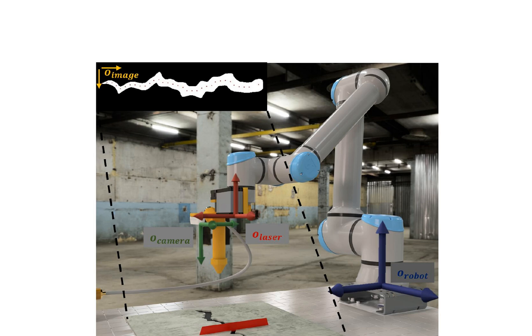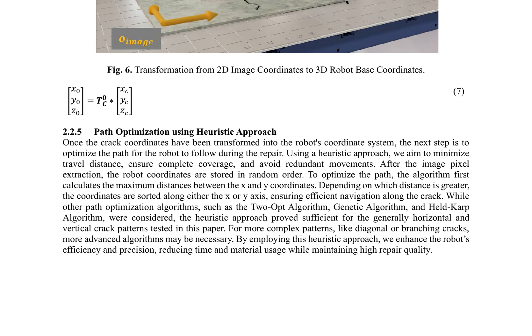The pixel coordinates are then transformed into 3D camera coordinates using the pinhole camera model, as illustrated by equation 6, and subsequently converted to robot-based coordinates using the camera's extrinsic parameters and the robot's API. The proposed method enables accurate and efficient crack detection and coordinate extraction, forming the basis for the subsequent stages of the repair process.